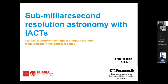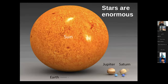Thank you. So IACTs means Imaging Atmospheric Cherenkov Telescope — the MAGIC telescopes, for example. I will be talking about how these telescopes can perform sub-milli-arcsecond measurements in several ways. Please bear with me; I will be talking about some topics that probably many people here know more than me.